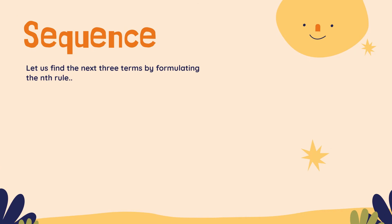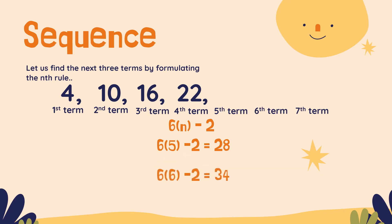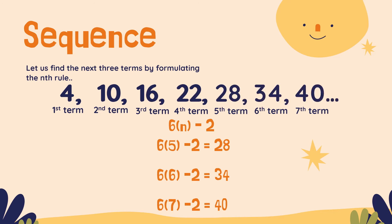Now, let us find the next 3 terms using the Nth rule we just formulated. The sequence is 4, 10, 16, 22. We are looking for the 5th, 6th, and 7th terms using the rule 6N minus 2. So we replace N by 5, 6, and 7: 6 times 5 is 30 minus 2 equals 28; 6 times 6 is 36 minus 2 equals 34; 6 times 7 minus 2 equals 40. So the 5th term is 28, and the 6th term is 34.